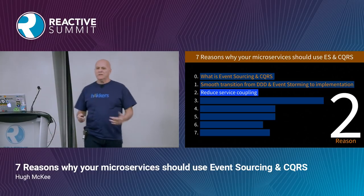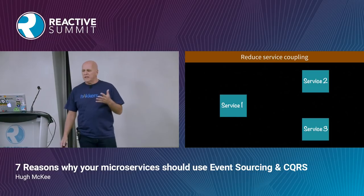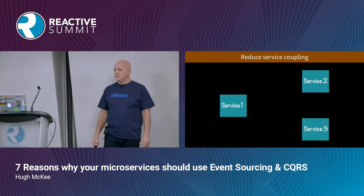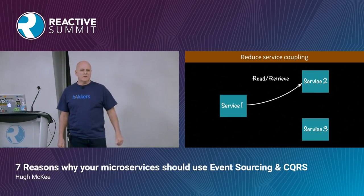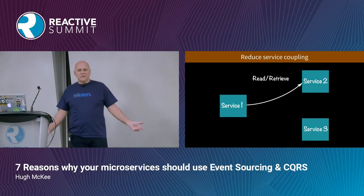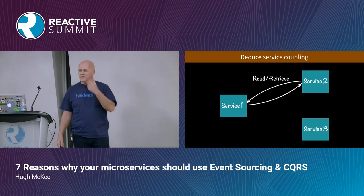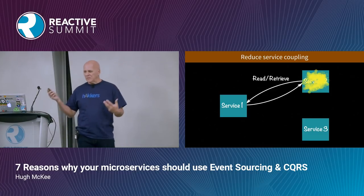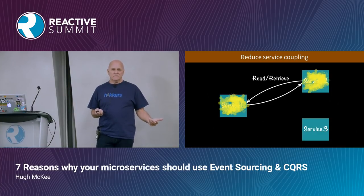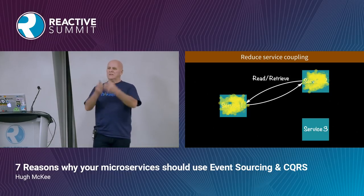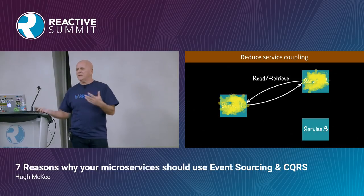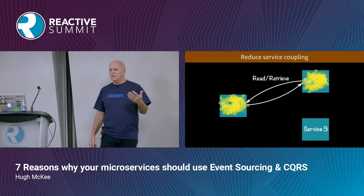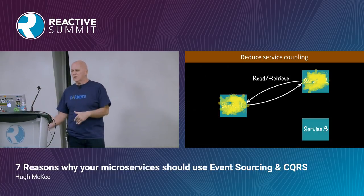Another reason: reduced service coupling. Say we have three services. Service one needs to retrieve information from service two — easy to do with HTTP REST, just do a GET. But what happens when service two goes down? That's a form of coupling: when service two goes down, it might effectively take service one down. The blast area of one service going out could drag down other services. It works great when everything's working, but not very well when things start to break.